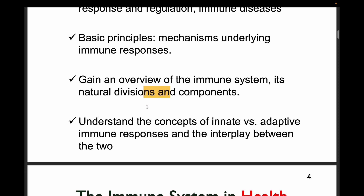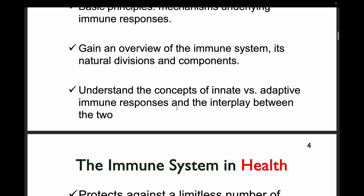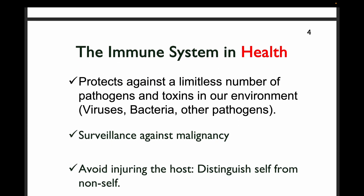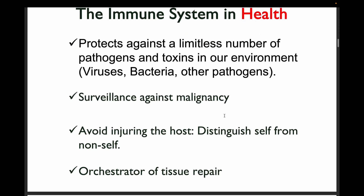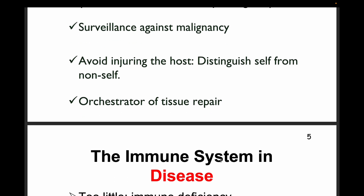We need to understand the concept of innate versus adaptive immune responses and the interplay between them. Our immune system in health protects against a limitless number of pathogens and toxins. It does surveillance against malignancy — both benign and cancerous tumors — and avoids injuring the host. It gets rid of pathogens without harming the body, and it is an orchestrator of tissue repair. Inflammation, which is an immune response, leads to repairing.